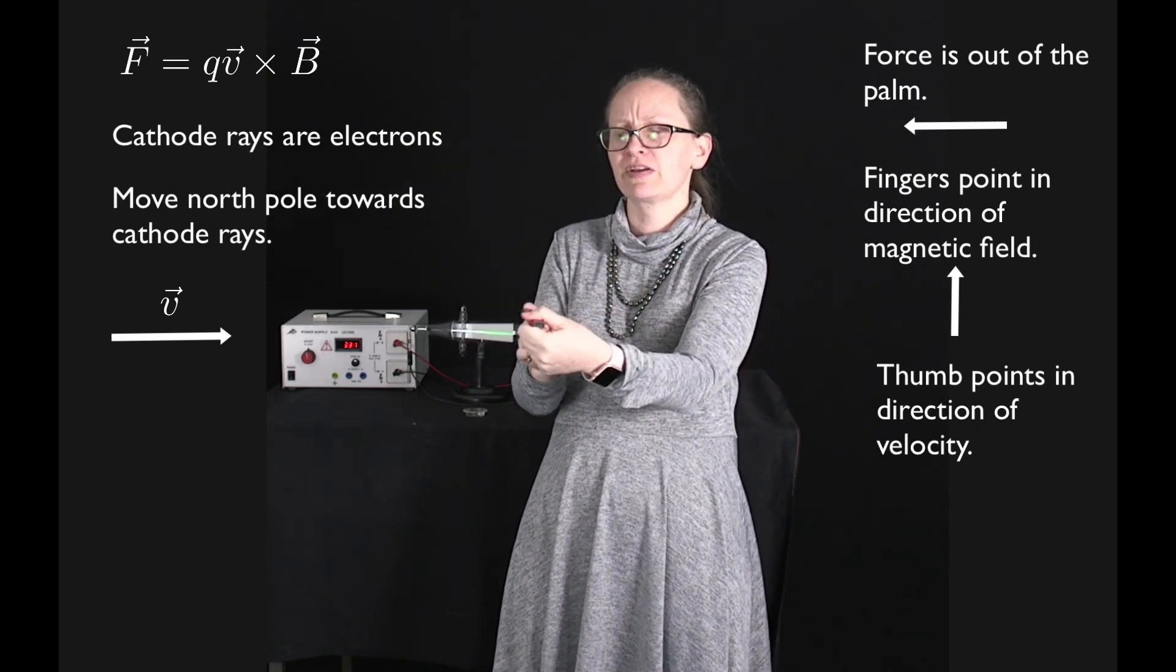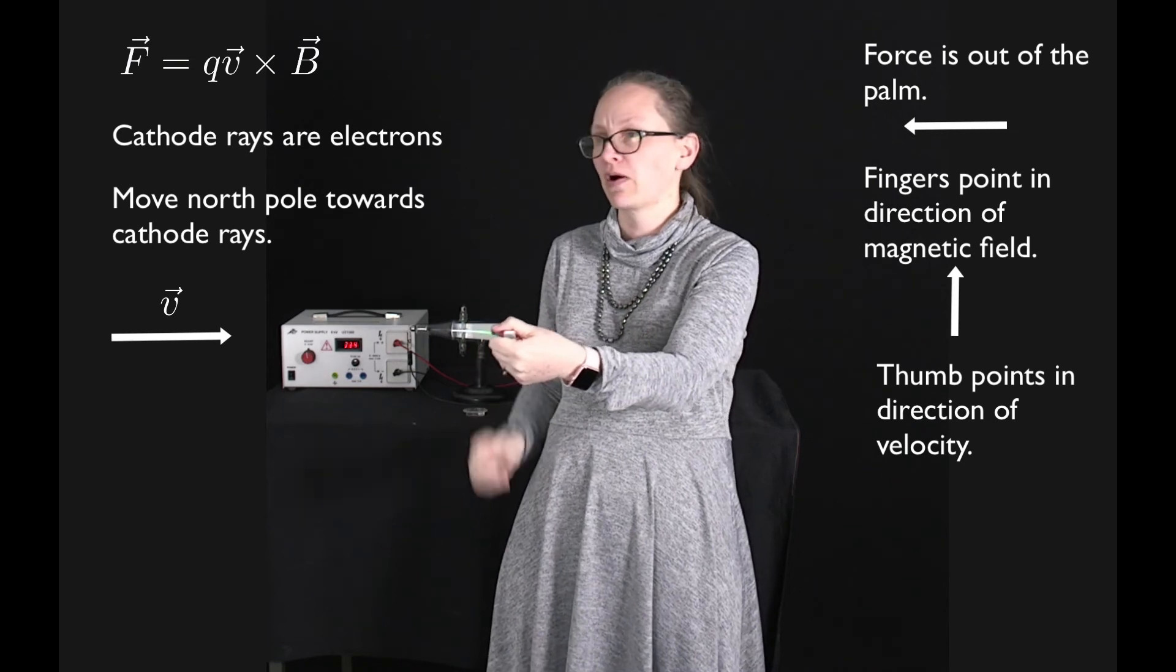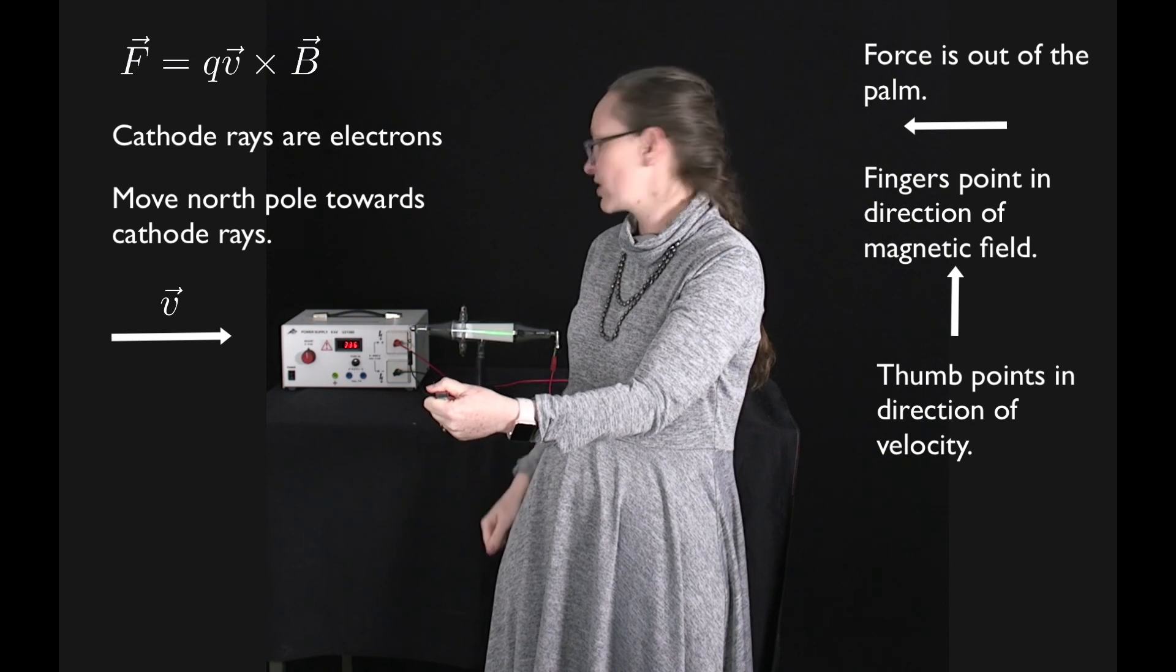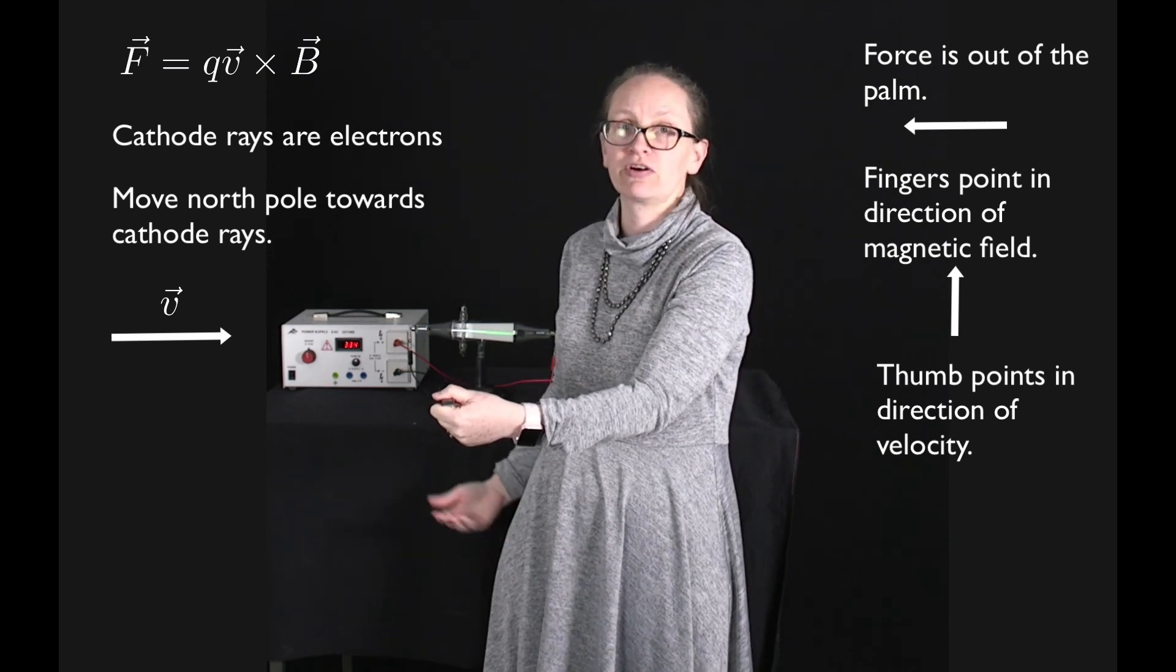So the magnetic field lines are coming out of the north pole like this, and I want you to think about now which direction are the cathode rays going to feel a force.